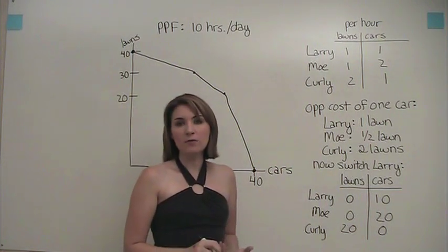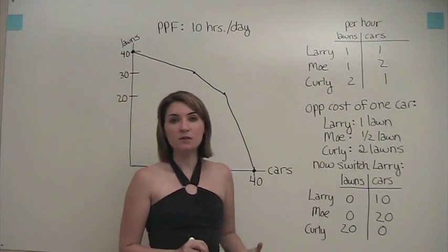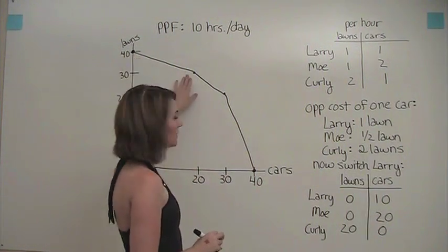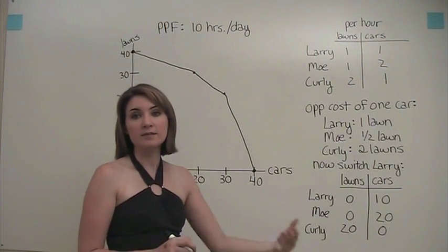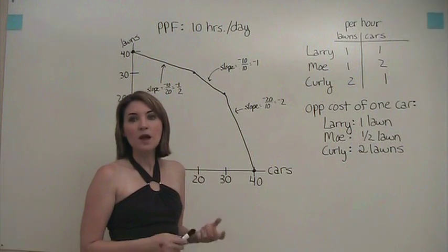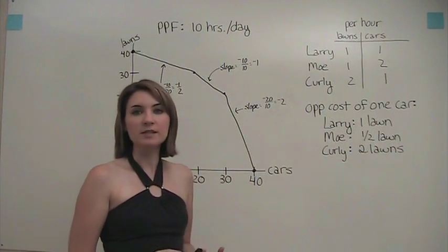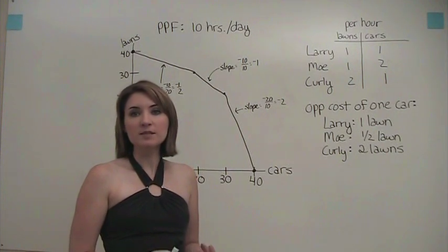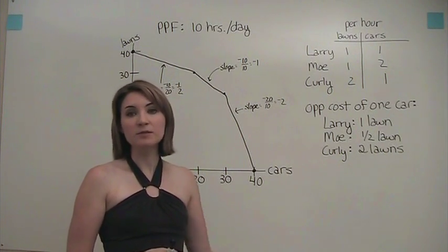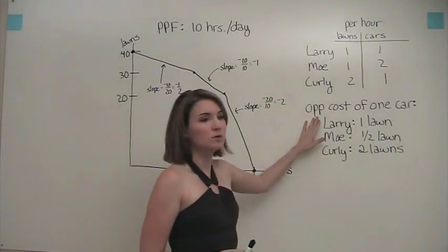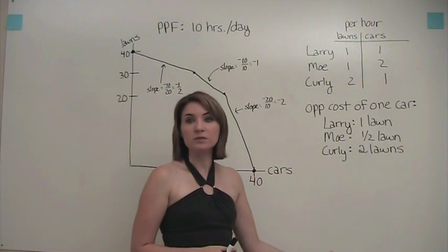So this is what our overall production possibilities frontier looks like. And you'll notice that there's a breakpoint in the slope of the curve each time we switch a new person over from one activity to another. Again, let's think of the meaning of the slope of our production possibilities frontier. Now you'll see even more explicitly that the slope of the production possibilities frontier, or at least the absolute value of the slope, relates back to the opportunity cost of one activity in terms of the other.